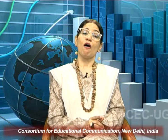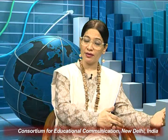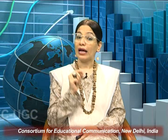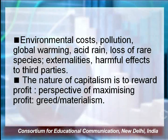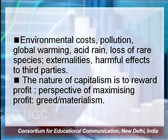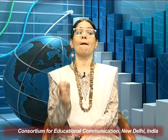The freedom of a monopoly can be misused. There is also the big issue of immobilities — in a free market, factors of production are supposed to move easily from an unprofitable sector to a new profitable industry, but in reality there are huge problems with such mobility. The working of organizations has also had environmental costs: pollution, global warming, acid rain, loss of rare species, and broader externalities — harmful effects to third parties. A key critique is that capitalism rewards profit and can promote greed and materialism.